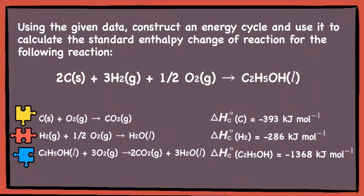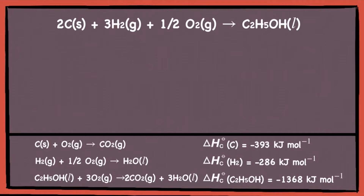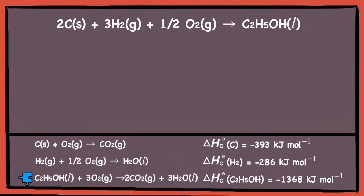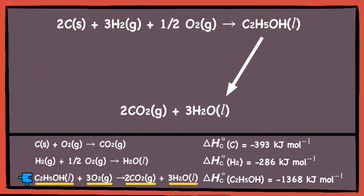Now that we have our three puzzle pieces, let's try to fit them into the energy cycle. You can choose any one of them to start with, so I'm going to go with the third equation first. We need to identify the substance in the third equation, which in this case is ethanol. The equation states that one mole of ethanol reacts with three moles of oxygen to form two moles of carbon dioxide and three moles of water. So we draw an arrow down and copy down the products, then label the enthalpy change to represent the reaction.